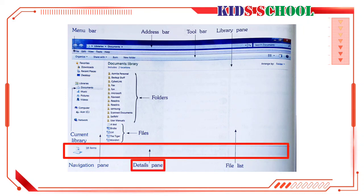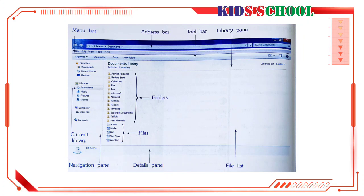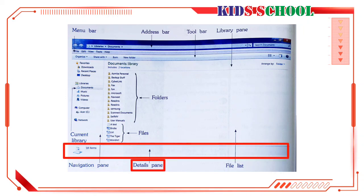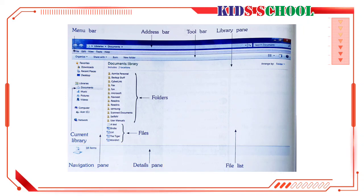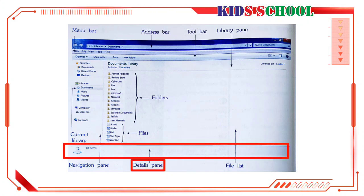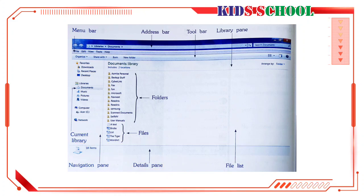Details Pane: Dear students, the details pane shows the details of the selected file or folder in the file list. If you place the mouse pointer over a file or folder, the details pane will show the name of the author, the date you last changed the file, etc. In this picture, the details pane shows 18 items — the number of files and folders in the Documents Library.